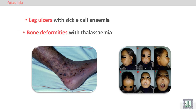Another specific sign is leg ulcers — ulceration of the leg — which occurs with sickle cell anemia, to be discussed in detail later. Bone deformities, such as protrusions of the face, occur with thalassemia.